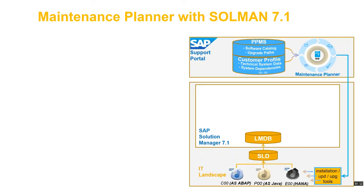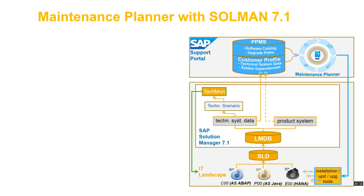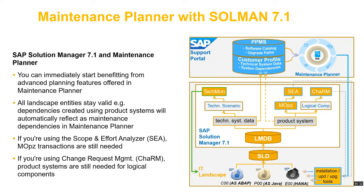Let's talk about how Maintenance Planner works with Solution Manager 7.1. Even if you are using Solution Manager 7.1, you can still use Maintenance Planner to maintain your SAP landscape, and all dependencies created using LMDB will still be applicable. However, if you are using ChaRM (Change Request Management) and Scope and Effort Analyzer as part of Solution Manager 7.1, you will still need product system data and Maintenance Optimizer, since product system data is used for logical components in ChaRM and by Scope and Effort Analyzer. In a nutshell, with Solution Manager 7.1 you can use both — Maintenance Planner to upgrade systems and Maintenance Optimizer for Scope and Effort Analyzer.